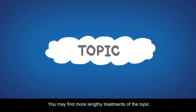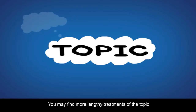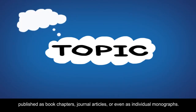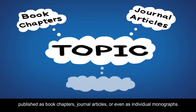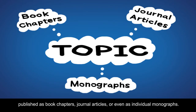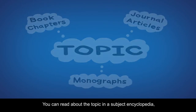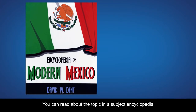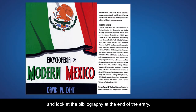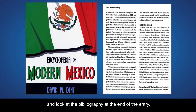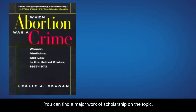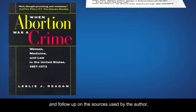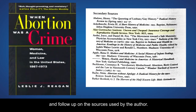You may find more lengthy treatments of the topic published as book chapters, journal articles, or even as individual monographs. You can read about the topic in a subject encyclopedia and look at the bibliography at the end of the entry. You can find a major work of scholarship on the topic and follow up on the sources used by the author.